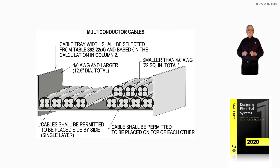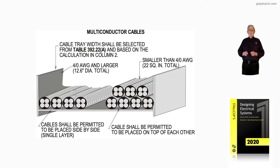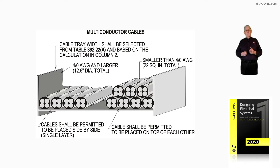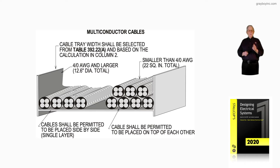This illustration deals with any mixture of cables when you're mixing them in accordance with NEC 392.22A1A through A1C. Notice in the cable tray we have multiple conductor cables, and 392.22A deals with multiple conductor cables. The cable tray width shown at the top should be selected from Table 392.22A, based on the calculation in column 2 of that table.